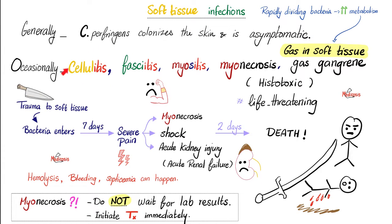What are the diseases caused by Clostridium perfringens? We have soft tissue infections, including cellulitis, fasciitis, myositis, myonecrosis, and gas gangrene — gas in your soft tissue, as we discussed before. Moreover, there is shock and acute kidney failure. This is a rapidly fatal condition. If your patient has myonecrosis and gas gangrene, please do not wait for labs — start treatment immediately. Rule number one: do no harm.